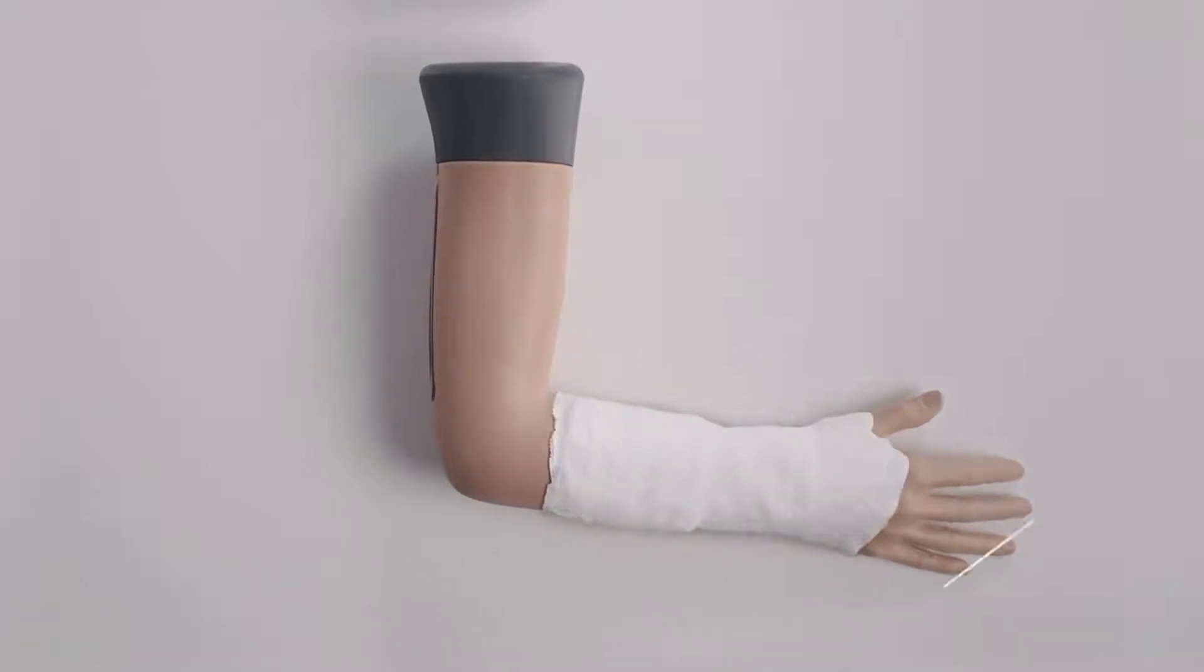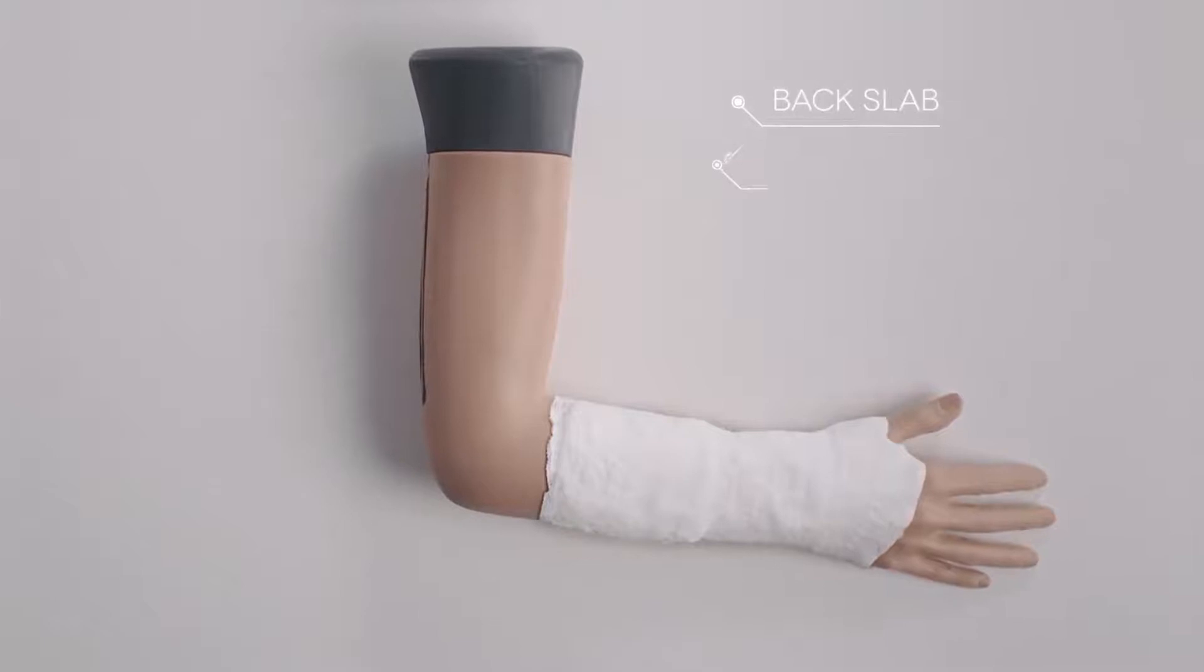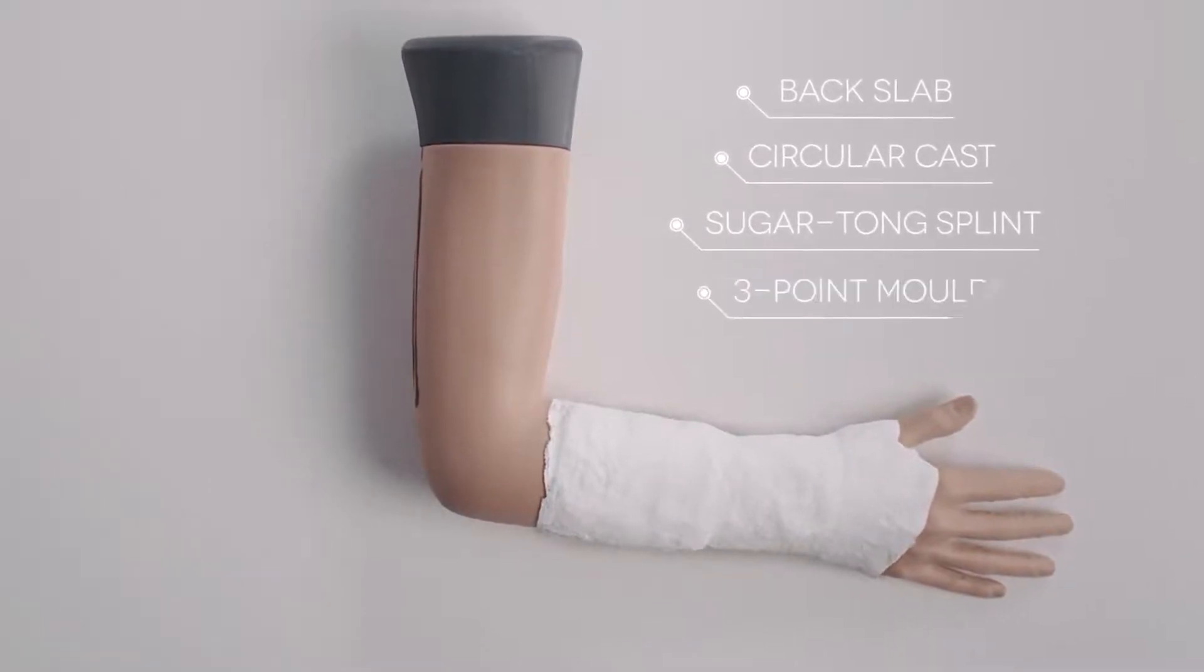The model also accommodates a number of plastering techniques, including back slab, circular cast, sugar-tong splint, and three-point molds.